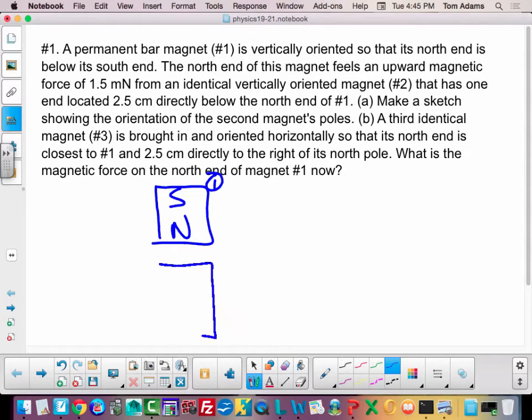Then I have a vertically oriented magnet, and there is a force that's exerted on magnet number one from magnet number two, and that force is equal to 1.5 millinewtons, and that force is directed upward. I happen to know that the distance from the north end to the north end is 2.5 cm, so we have to make a sketch of the poles in the second magnet.